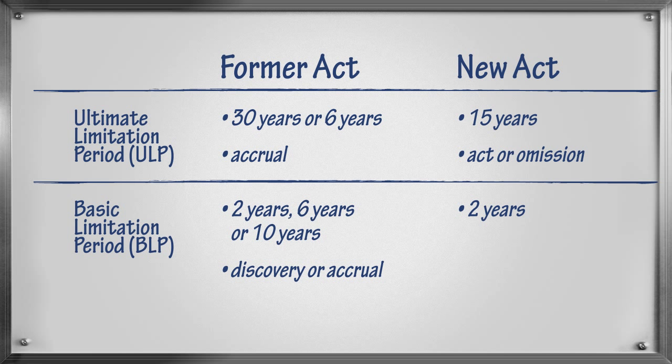The two-year basic limitation period runs from the date that the person discovers they have a legal claim. With this comparison of the basic and ultimate limitation periods in the former and new acts in mind, let's move on to the transition rules.